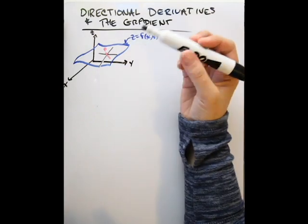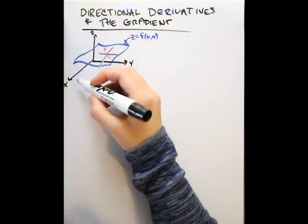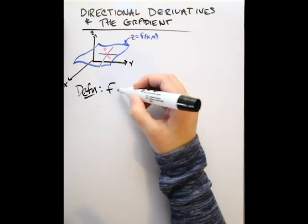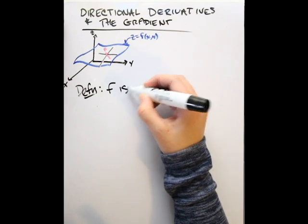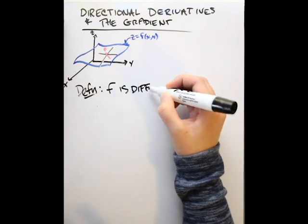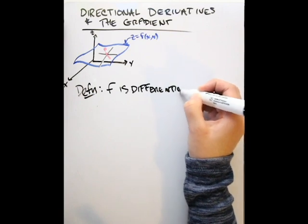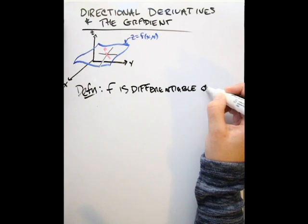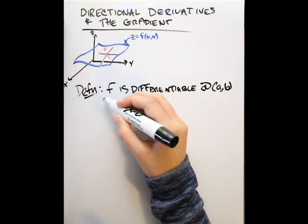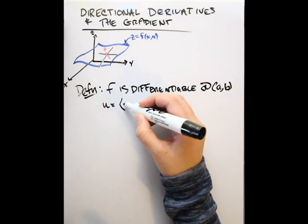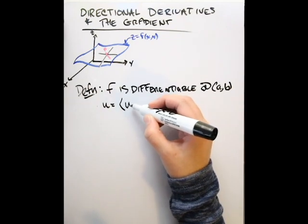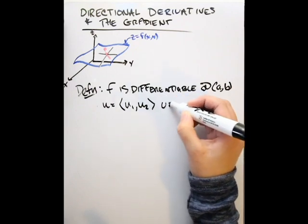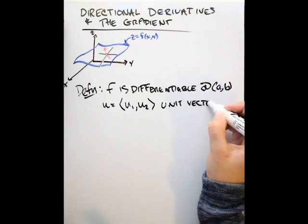For our definition, first we have to define our function. We say that F is differentiable at the point AB. We also define U as a unit vector in the x-y plane, so U is equal to the vector (U1, U2).